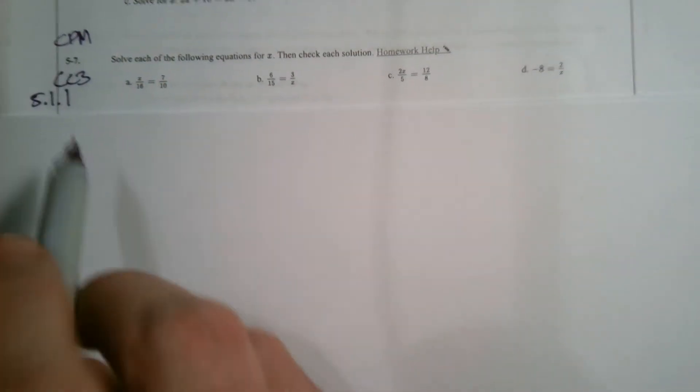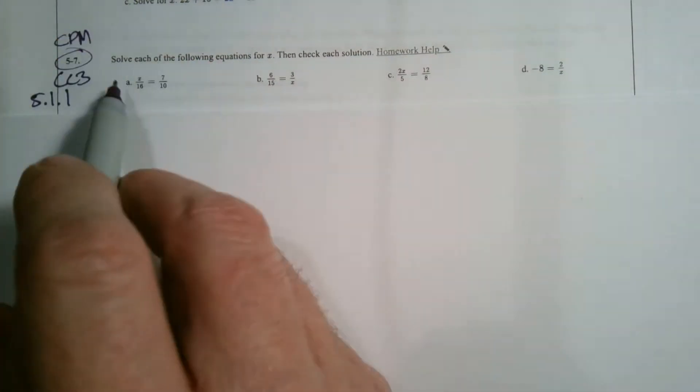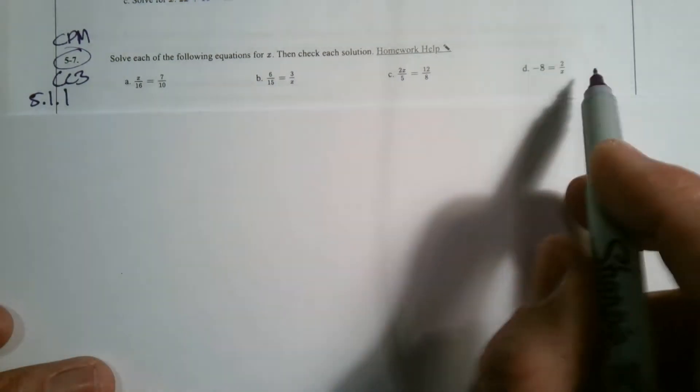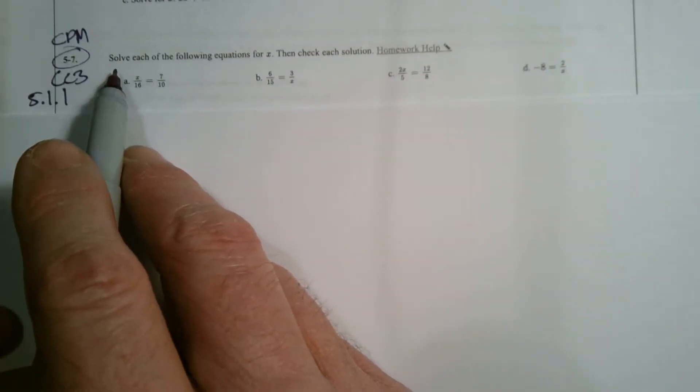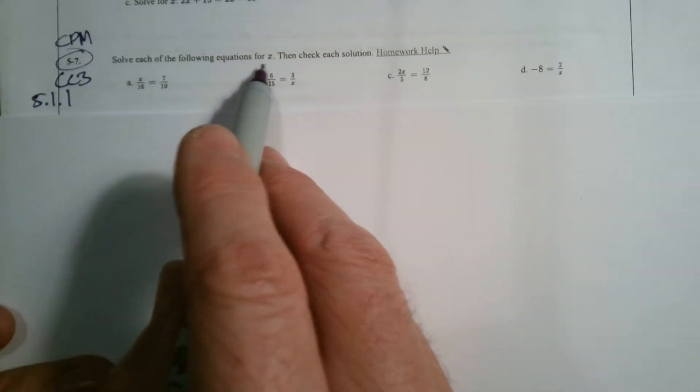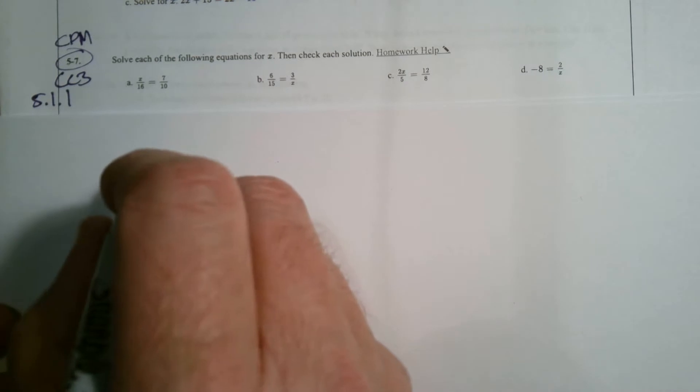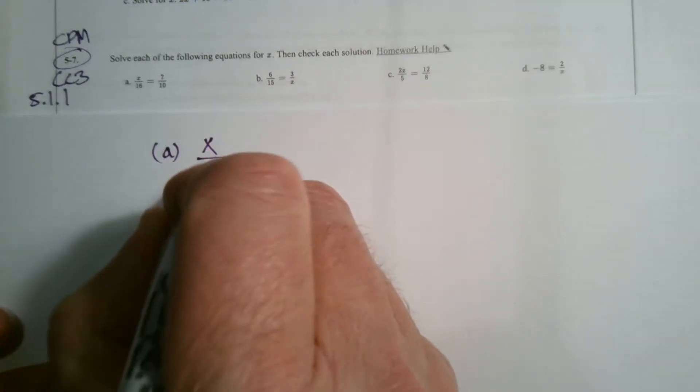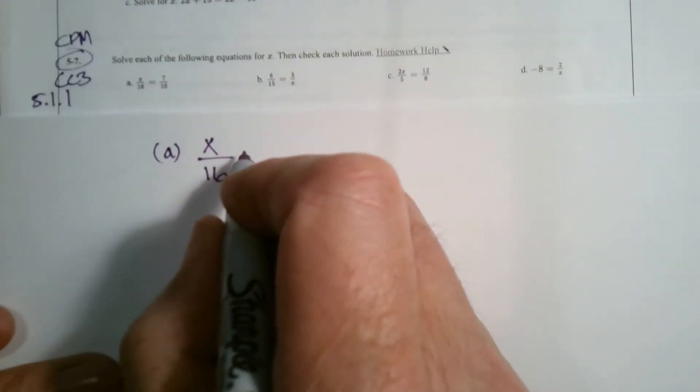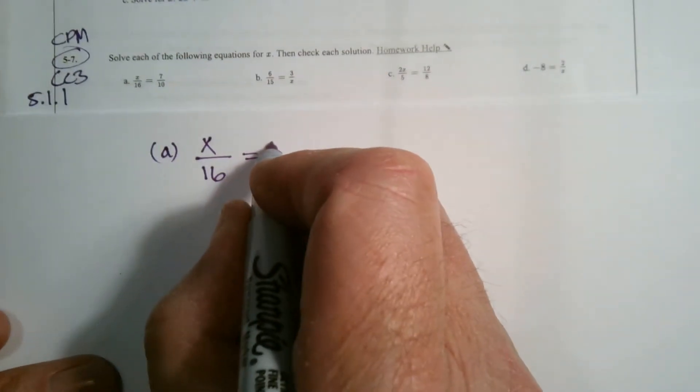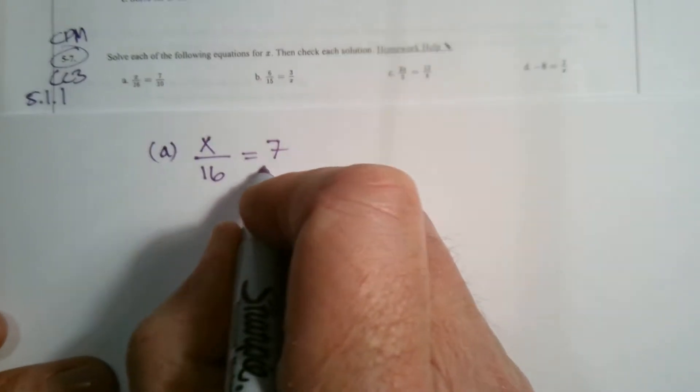So number 5-7. I'm looking at, and I'll do a few of these, see how far we need to go. So A, it says solve each of the following equations for X, then check your solution. So I'm going to rewrite because that's kind of small there. So A is X divided by 16, or X over 16, is equal to 7 over 10.